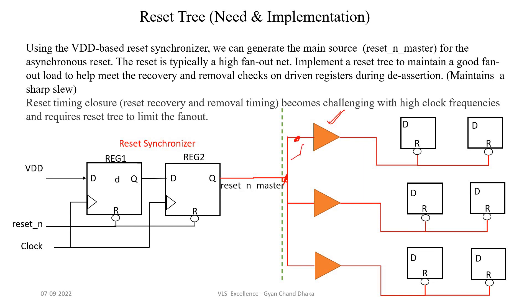This reset signal, with buffers inserted, will improve the drive strength and make the transitions short. We see that our reset signal is fanned out into three different signals going to different blocks in our design. This will avoid the loading effect at the reset net, and eventually it will help improve our recovery and removal timing constraints. I hope the need for a reset tree and how it is implemented in the design is clear.